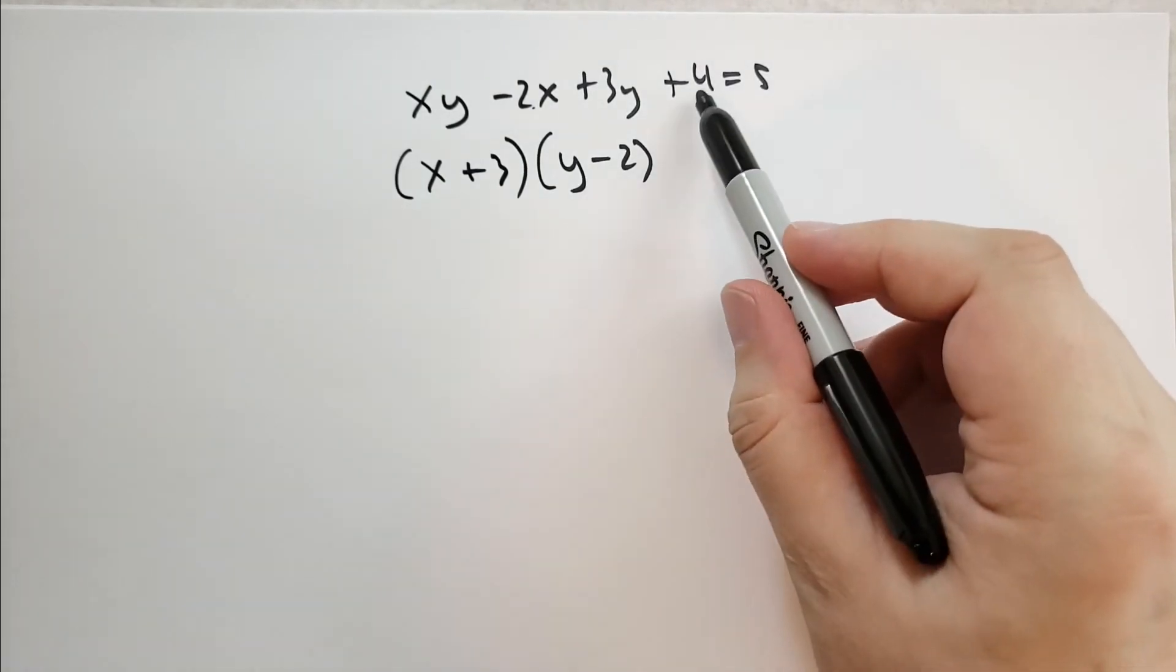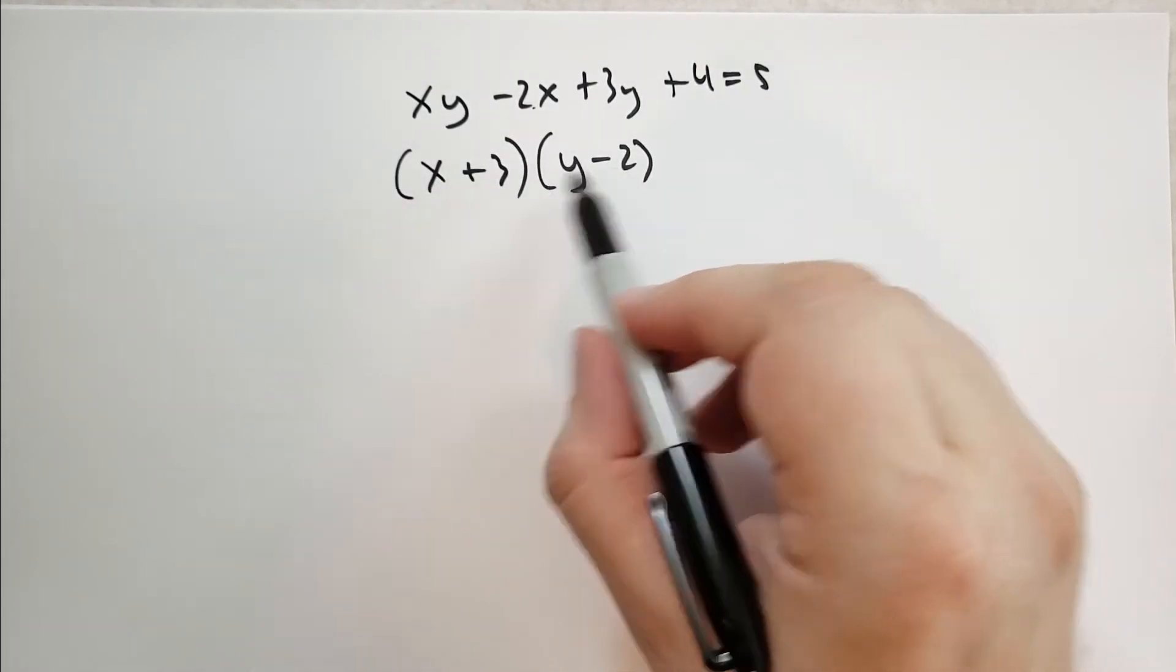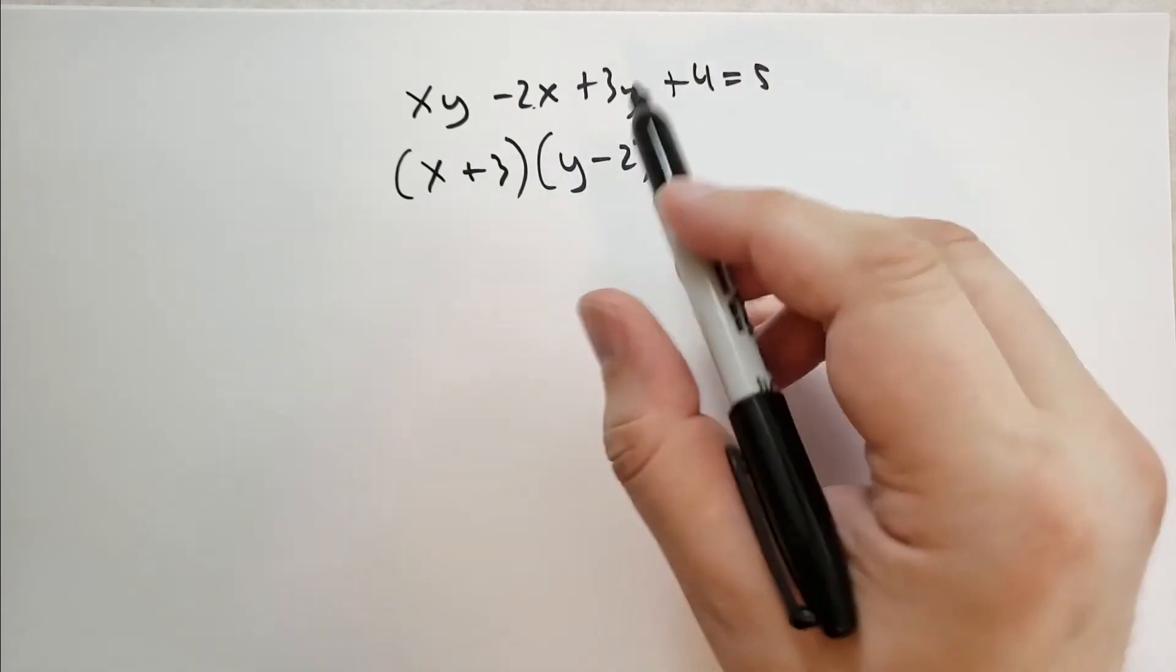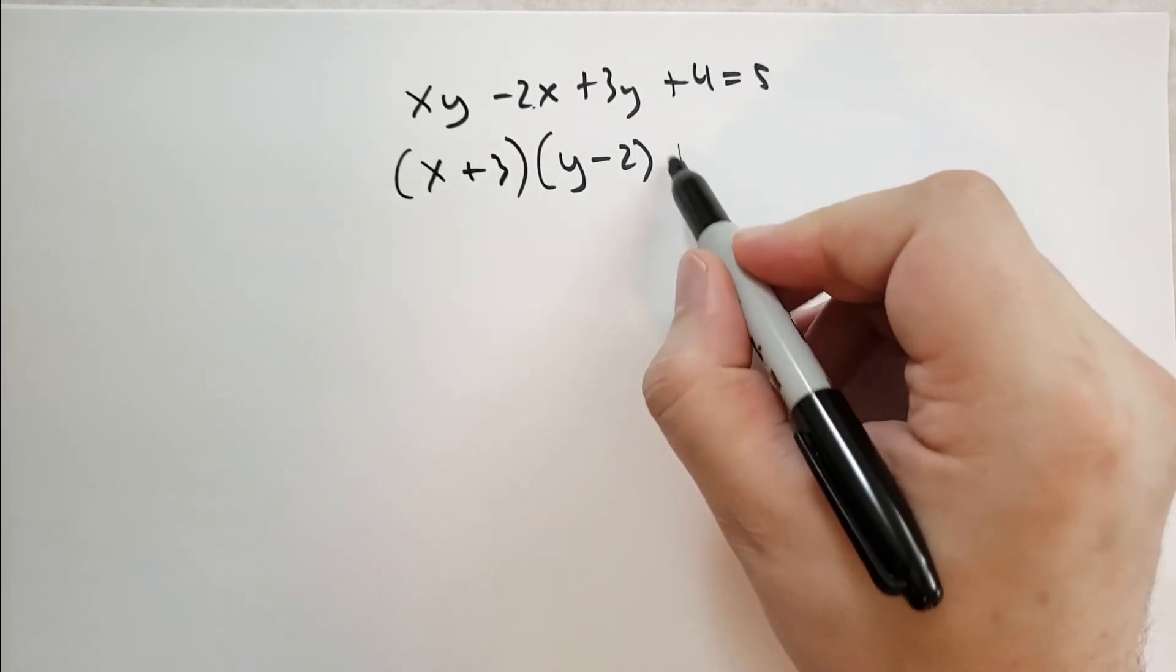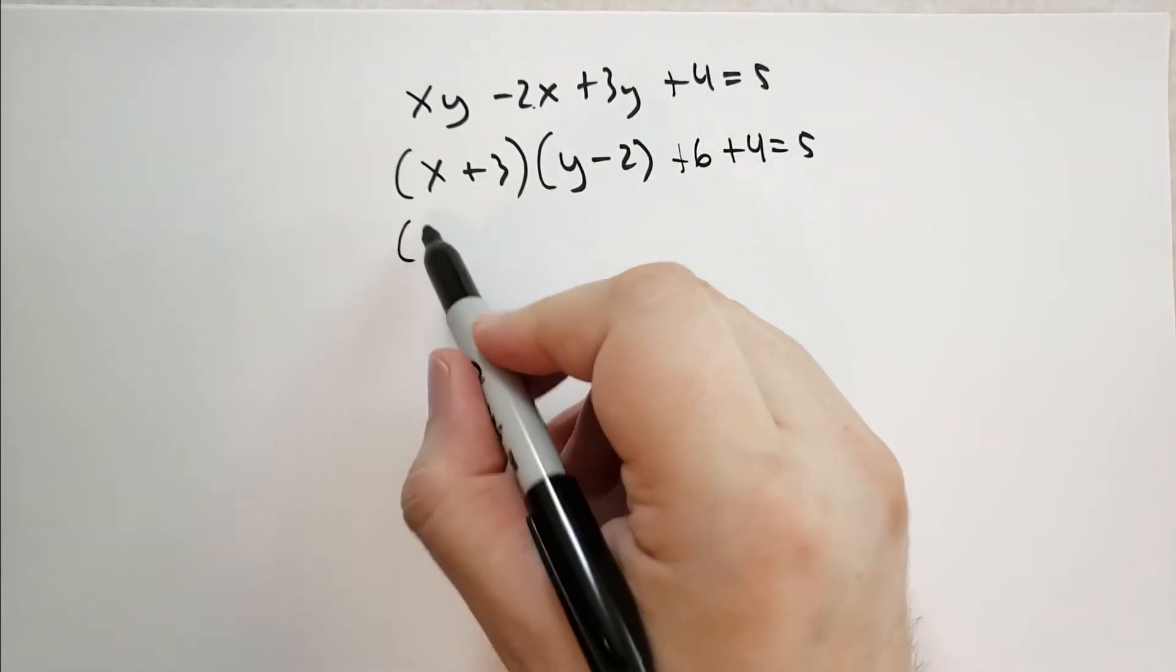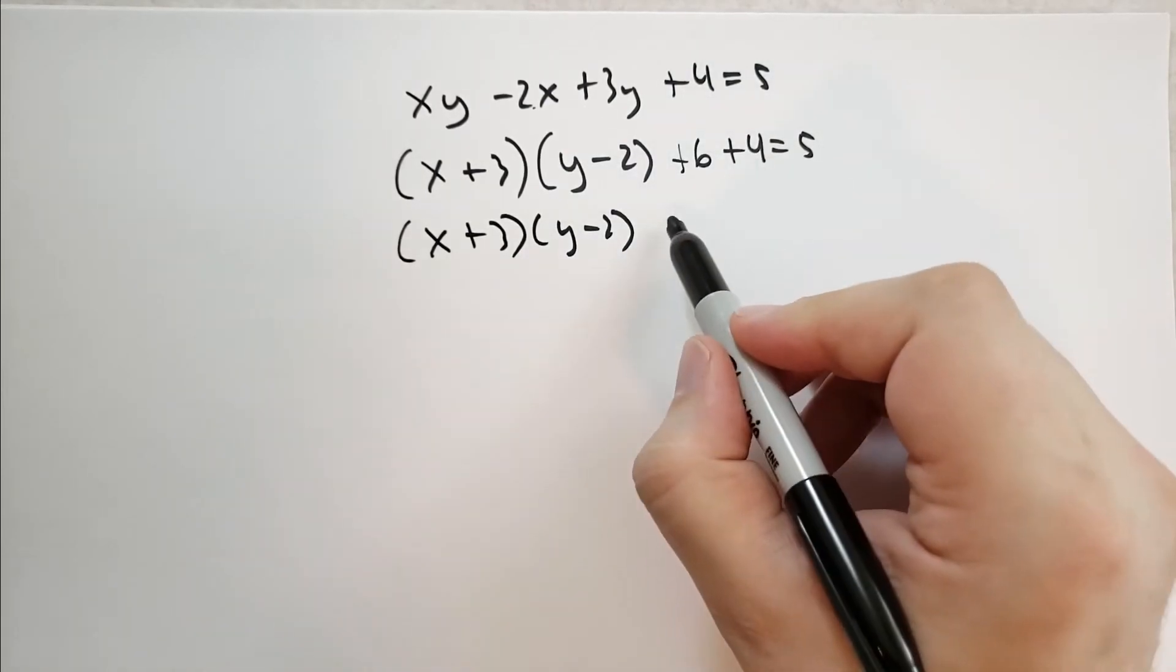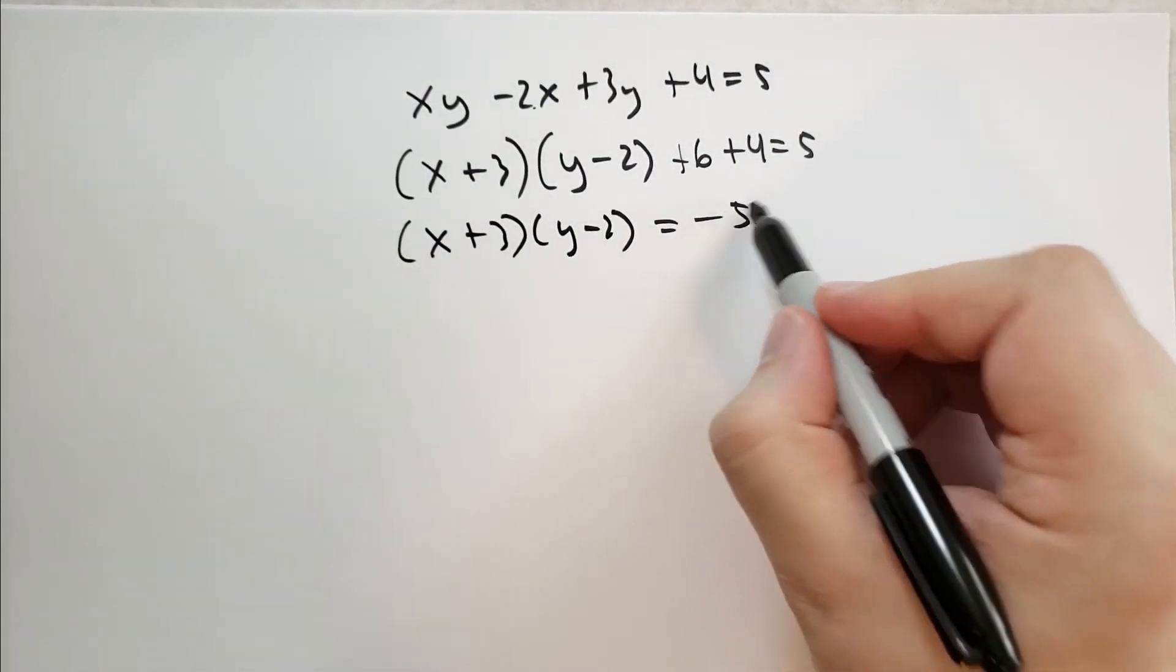And then we have this leftover term 4. Just like with completing the squares, if we put this down, then that means we had to take from somewhere a minus 6. So there's a minus 6 in here, so we have to add a 6 to keep everything balanced. So then we're going to get x plus 3 times y minus 2, minus 5.